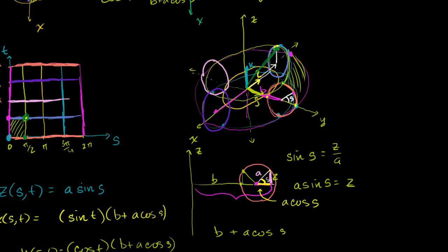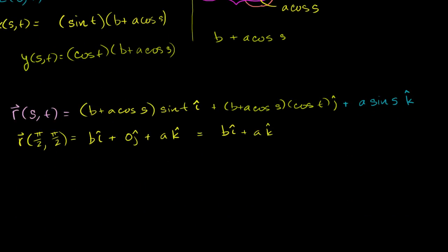That point corresponds exactly to that point on the torus, just as predicted. When you take every s and t in this domain, you transform it to this surface — and this position vector-valued function is that transformation. We specify s between 0 and 2π and t between 0 and 2π (we could remove one equal sign since 2π overlaps with 0, though it won't change surface area). Hopefully this gives you a solid sense of how to parameterize these shapes and what we're doing, because this will be really important when we start talking about surface integrals. The hardest part is just the visualization.